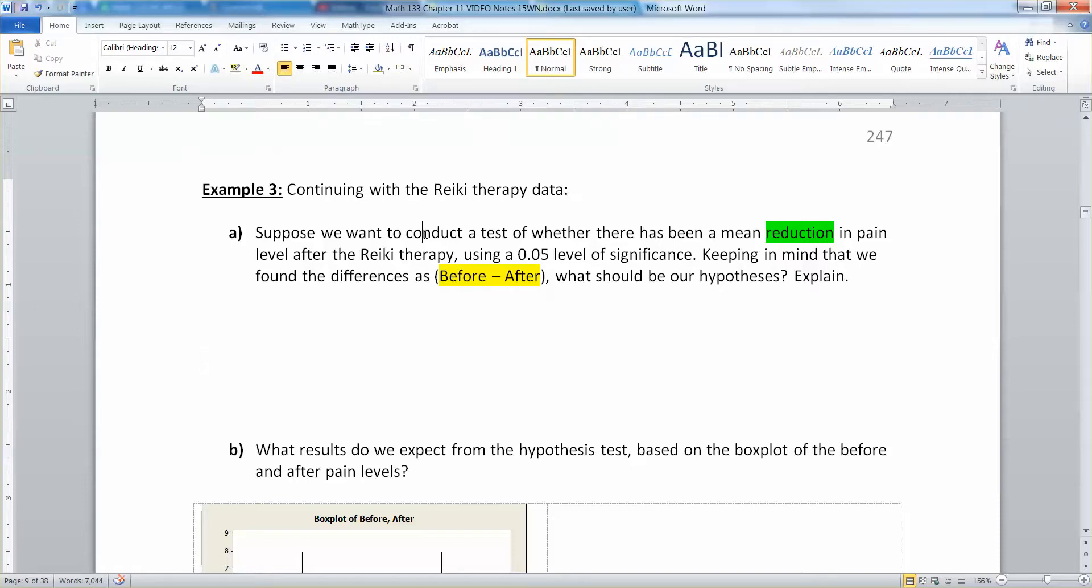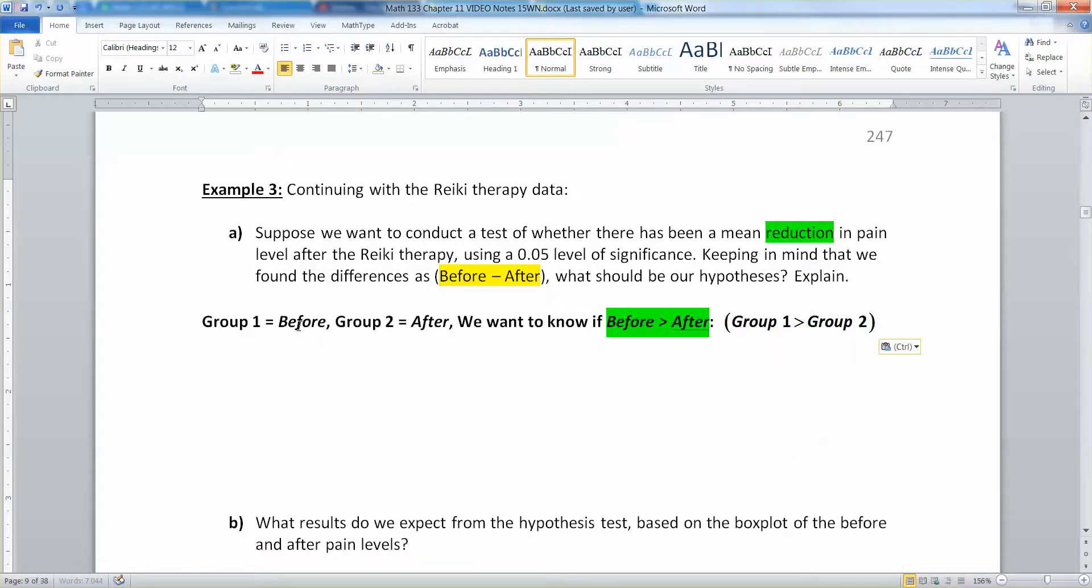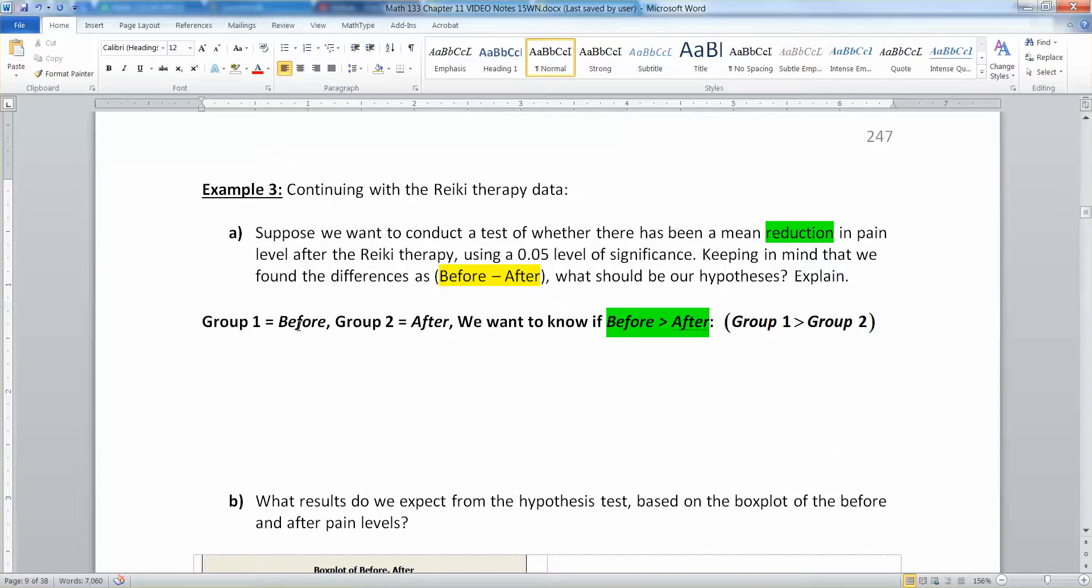We want to conduct a test of whether there's a mean reduction in pain after Reiki therapy using a 0.05 level of significance. Keep in mind we found the differences as before minus after. So what should our hypotheses be? The null hypothesis is pretty simple - it's always going to be mu_d equals zero. But the hard part is figuring out our alternative hypothesis. We established group one to be before minus after.